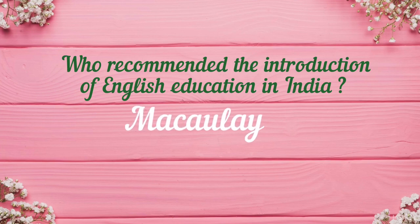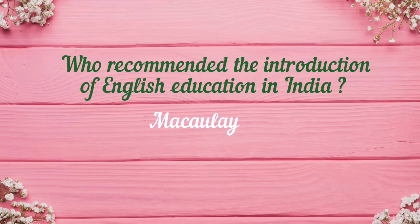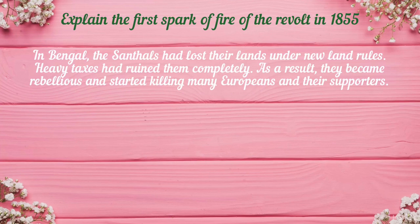Explain the first spark of fire of the revolt. In 1855 in Bengal, the Santals had lost their lands under new land rules. Heavy taxes had ruined them completely. As a result, they became rebellious and started killing many Europeans and their supporters.